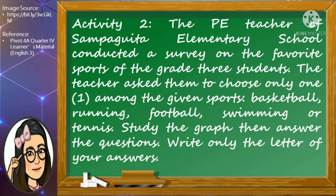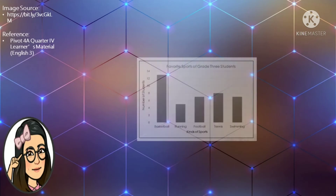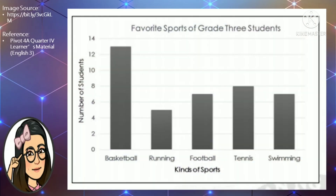For your second activity, here is the situation. The PE teacher of Sampaguita Elementary School conducted a survey on the favorite sports of the grade 3 students. The teacher asked them to choose only one among the given sports: basketball, running, football, swimming, or tennis. Study the graph, then answer the questions that follow. Write only the letter of your answers. Here is the table presenting the favorite sports of grade 3 students.